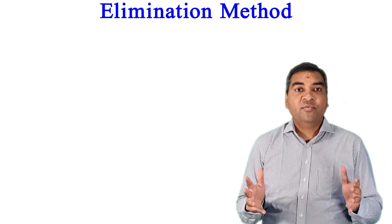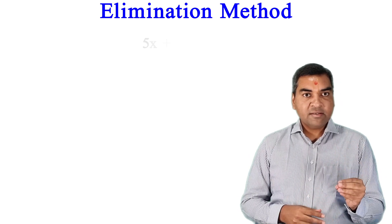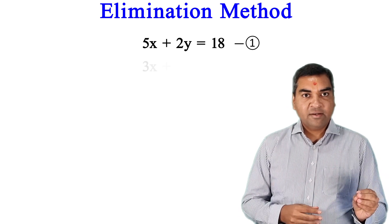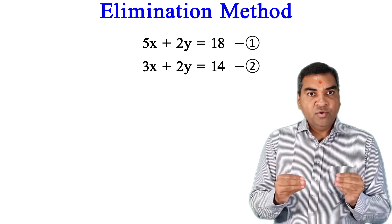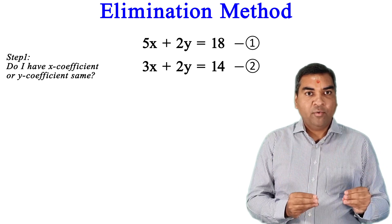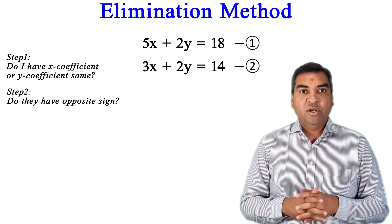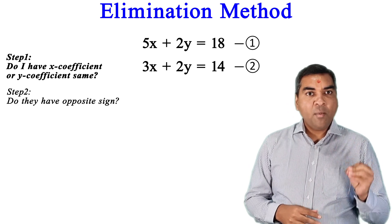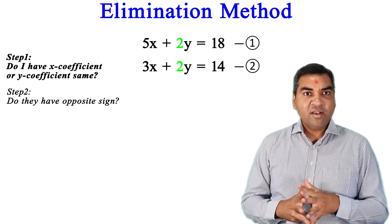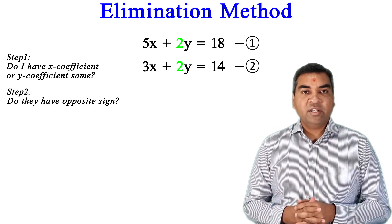Now the second kind of question. My first equation is 5x + 2y = 18 and my second equation is 3x + 2y = 14. Asking the first question: is the x or y coefficient the same? The x coefficients are 5 and 3 — not the same. The y coefficients are 2 and 2 — yes, they are the same.